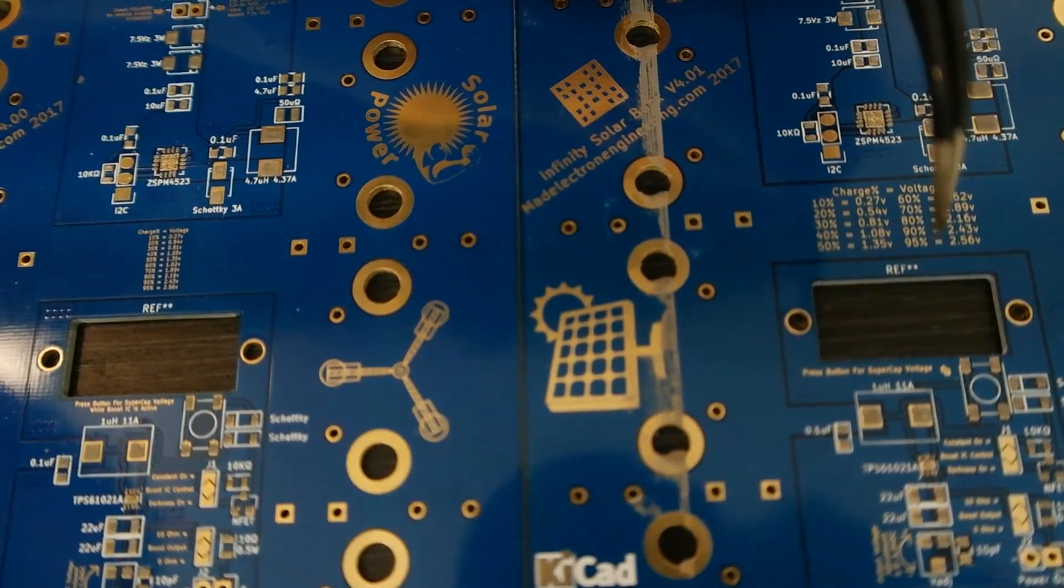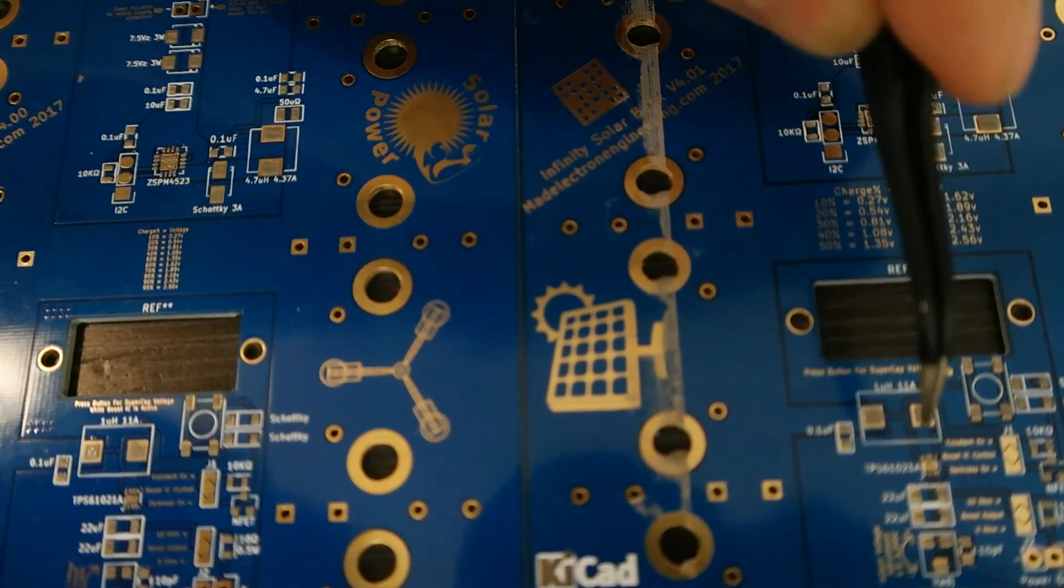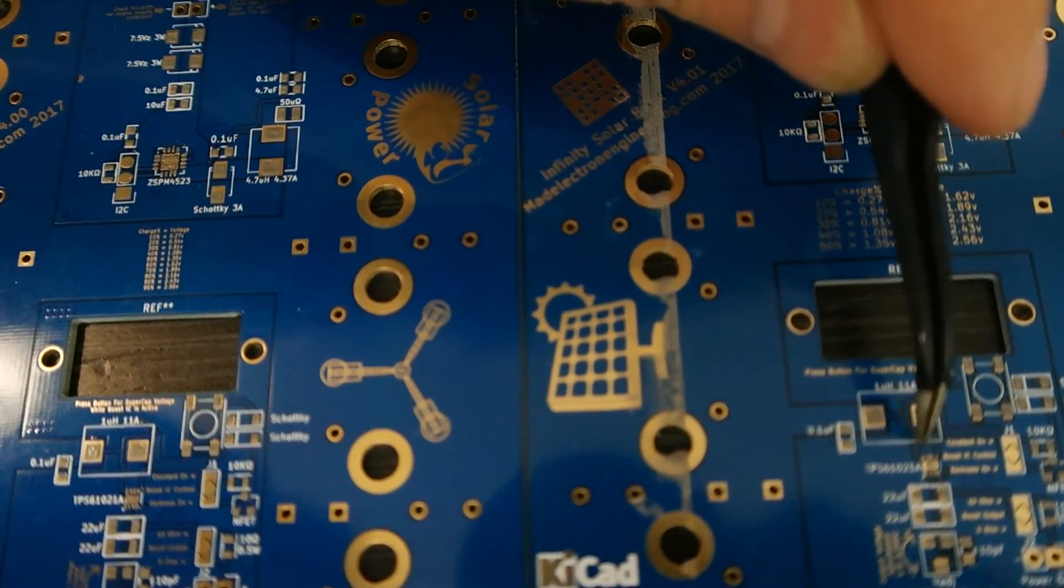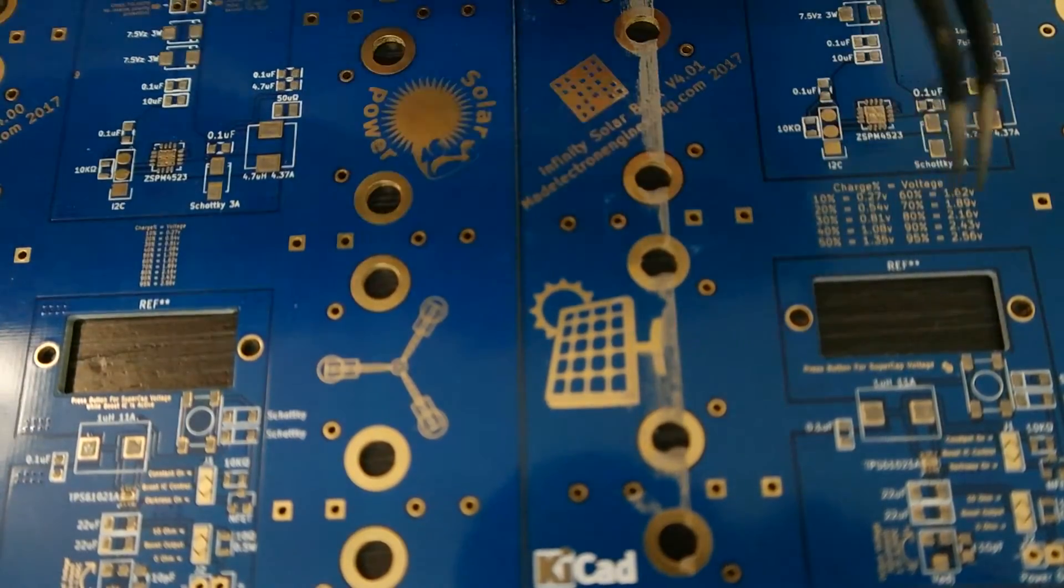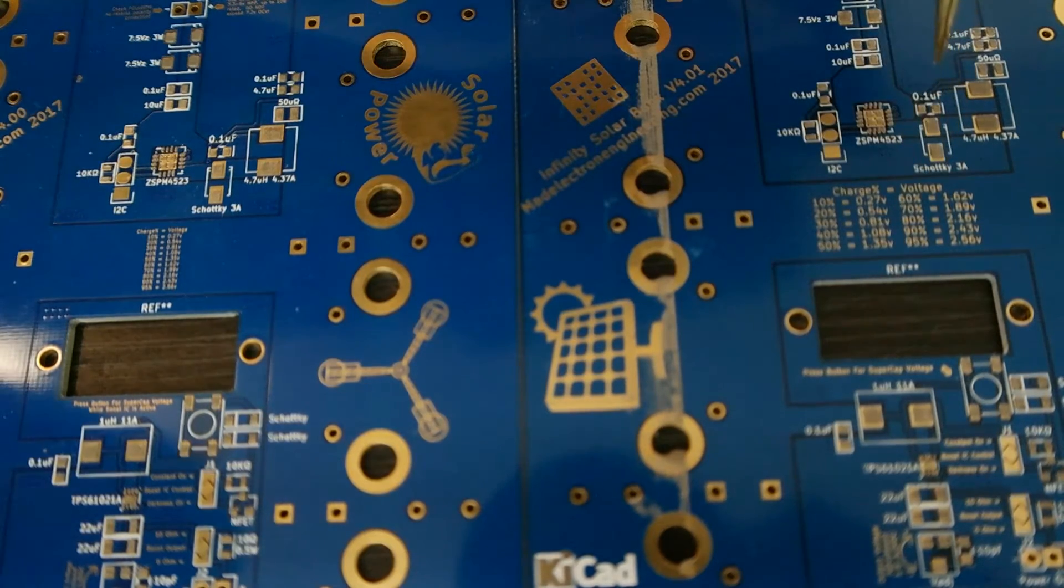I don't think I'll have any solder bridge problems with this. Let's go down to the TI one down here on the bottom. Unfortunately I don't think I'm going to be able to get it, but this one looks a lot better down here than it did over here on this side. I would definitely say the stainless steel stencil does as good if not a little bit better than the kapton.